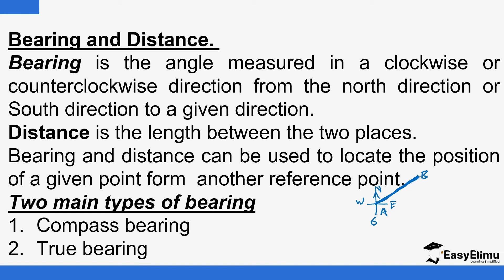So you either measure this angle from the north pole. It could be maybe 70 or 75 degrees, so you say the bearing of B from A is 75 degrees, if you measure that from the north pole. We're going to see when we do the measurement from the north pole and when we do the measurement from the south pole, and when you do the measurement in the clockwise direction versus the anticlockwise direction.